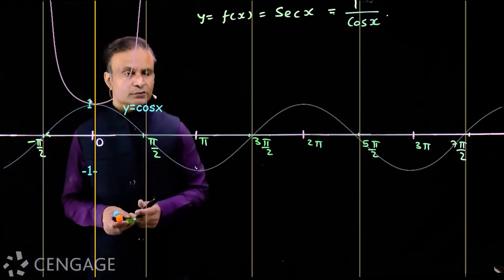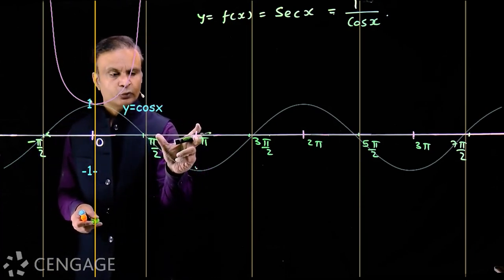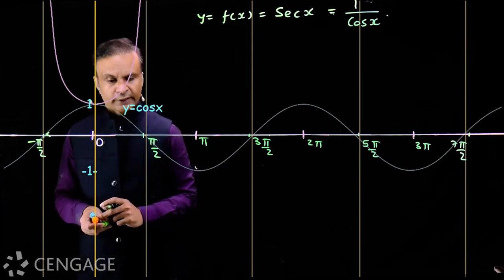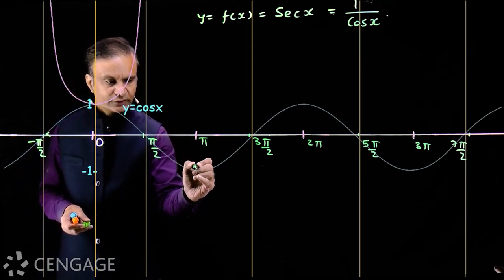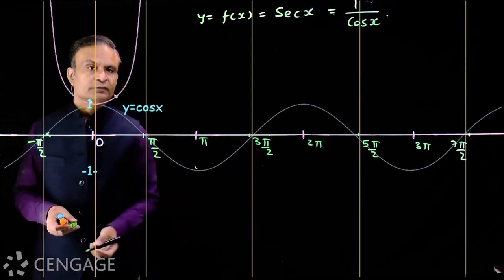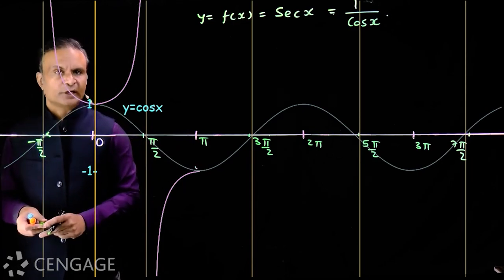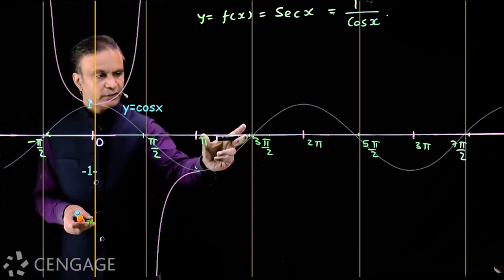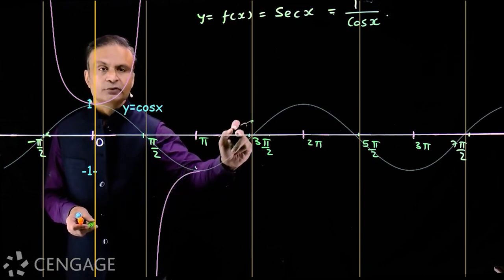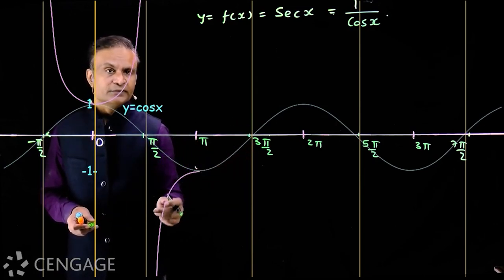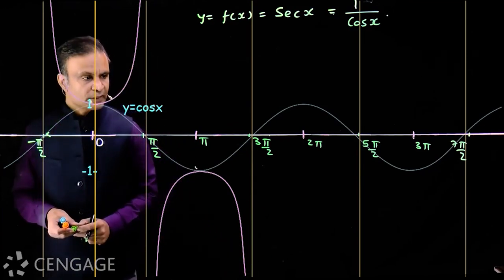cos(π) = -1, so sec(π) = -1. In the second quadrant, x ∈ (π/2, π), cos(x) decreases so sec(x) increases. In the third quadrant, cos(x) increases from -1 to 0, so sec(x) decreases. This gives us the graph of sec(x) in the interval π/2 to 2π.